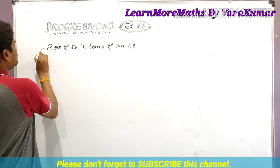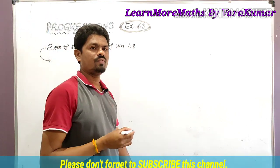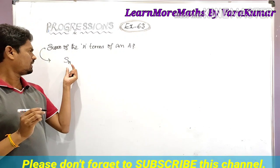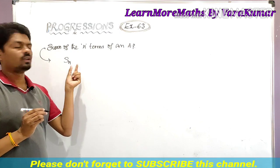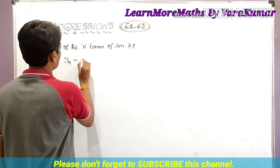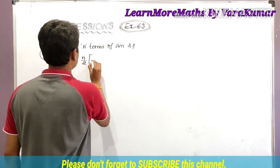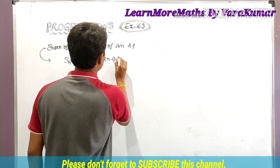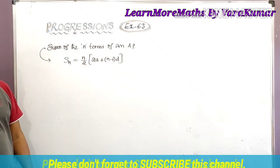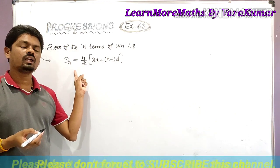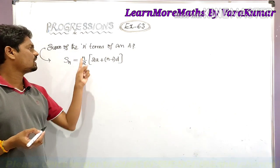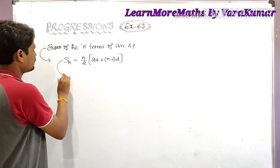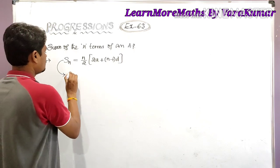The sum of n terms of an AP is denoted by Sn. The formula is: Sn = n/2 into (2a + (n-1)d). This is the formula for the sum of n terms of an arithmetic progression.